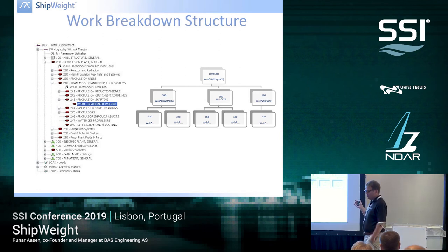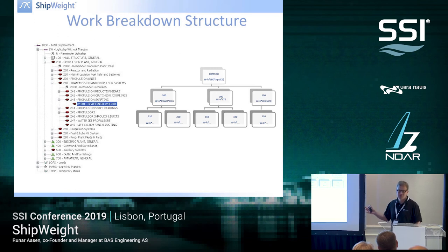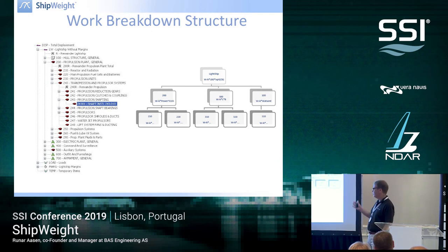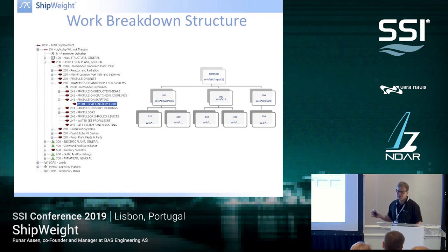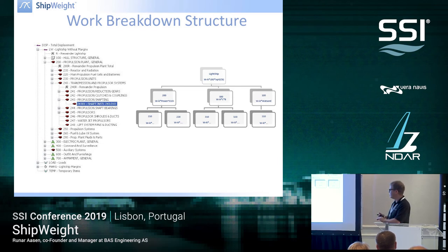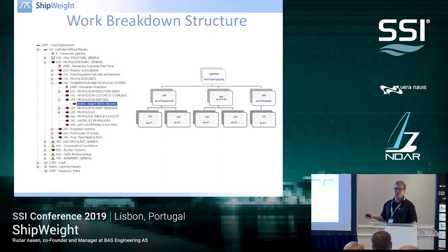When you're doing weight control, you need to have a work breakdown structure — a hierarchy of weight groups — that you use for your estimation and follow-up. You need to have at least one. There are some standards out there: SFI is a standard you could use, we have a ShipWeight standard, you could use the U.S. SWBS standard, or you can use your own in-house standard. That's perfectly fine, but you need to use one.